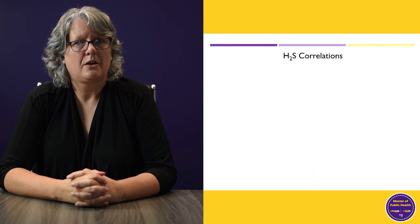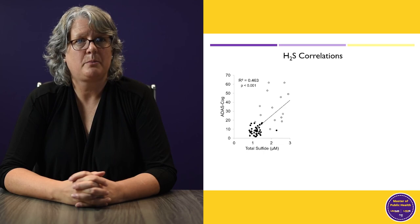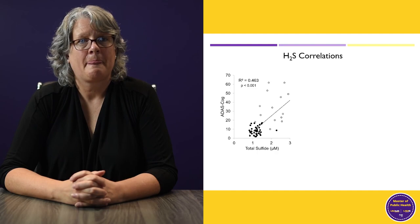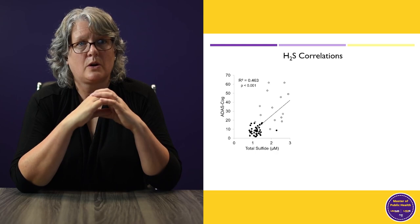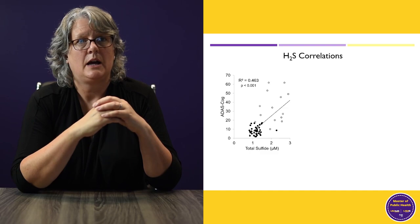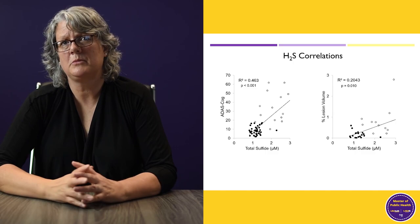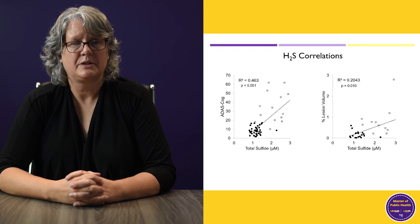Furthermore, we correlated hydrogen sulfide levels with cognitive outcome scores and saw a very strong correlation. The dark circles are the controls and the open circles are our Alzheimer's disease participants. If you're healthy, your cognitive function and hydrogen sulfide are in a pretty tight cluster down on the left. But once you start to have trouble, hydrogen sulfide levels start drifting up. We saw a similar strong relationship between lesion volume — that microvascular disease measure — and total hydrogen sulfide.